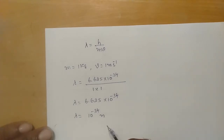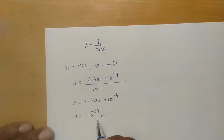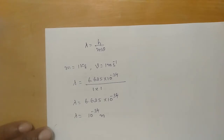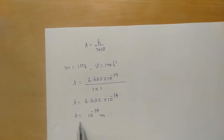It will be practically difficult for us to measure the de Broglie waves associated with macro objects, even though they are in motion and the concept of de Broglie wavelength is satisfied. We will still be unable to measure it because the wavelength will be very small.